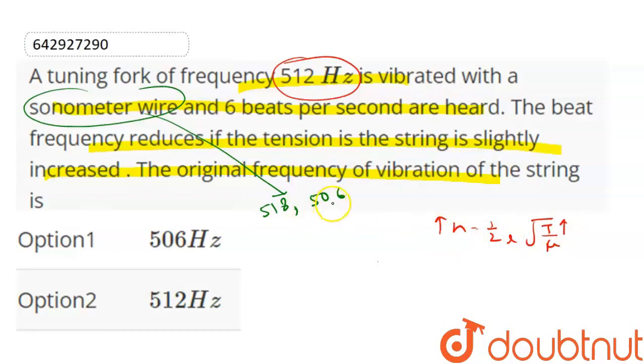If we see the frequency, which is 506, as 507, 508, the beat frequency can be reduced. If the answer is 506, it is an increase in frequency. The answer is 506.